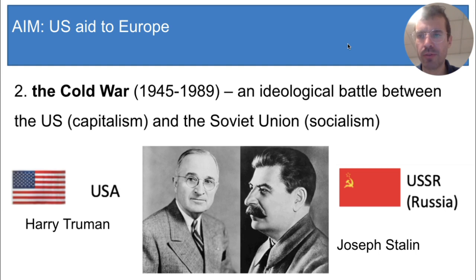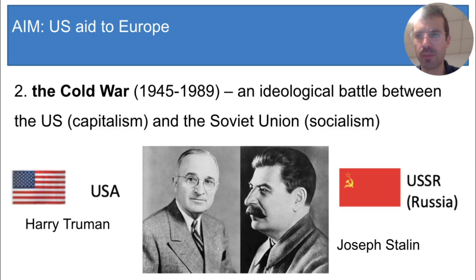So in the last video you learned about the Cold War, an ideological battle between the U.S. and the Soviet Union. And I said that the Cold War was an unusual war that was fought with unusual tactics. Today we're going to look at two tactics that the U.S. used to help spread capitalism in Western Europe.